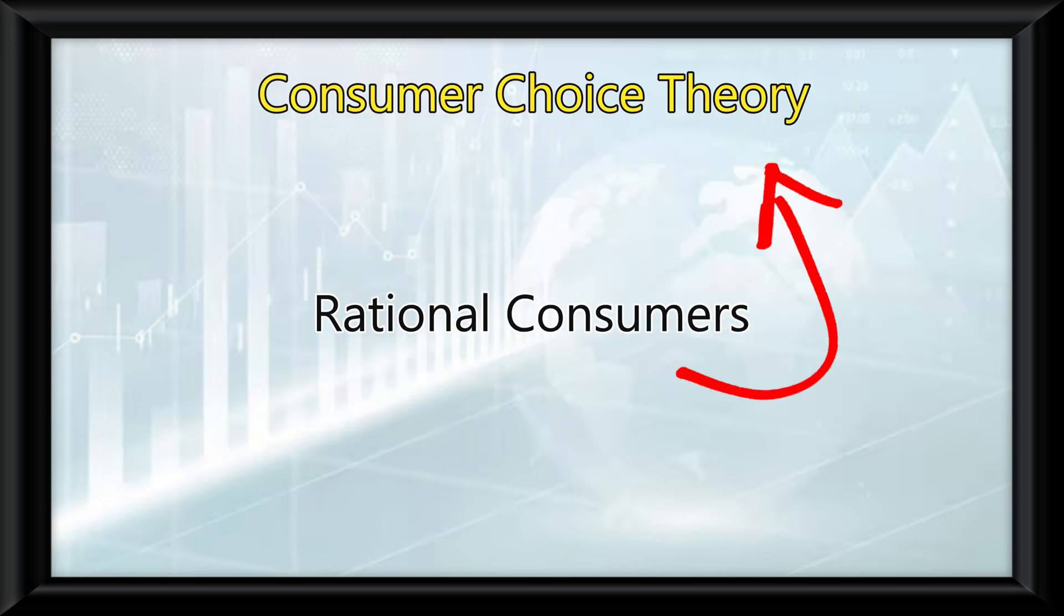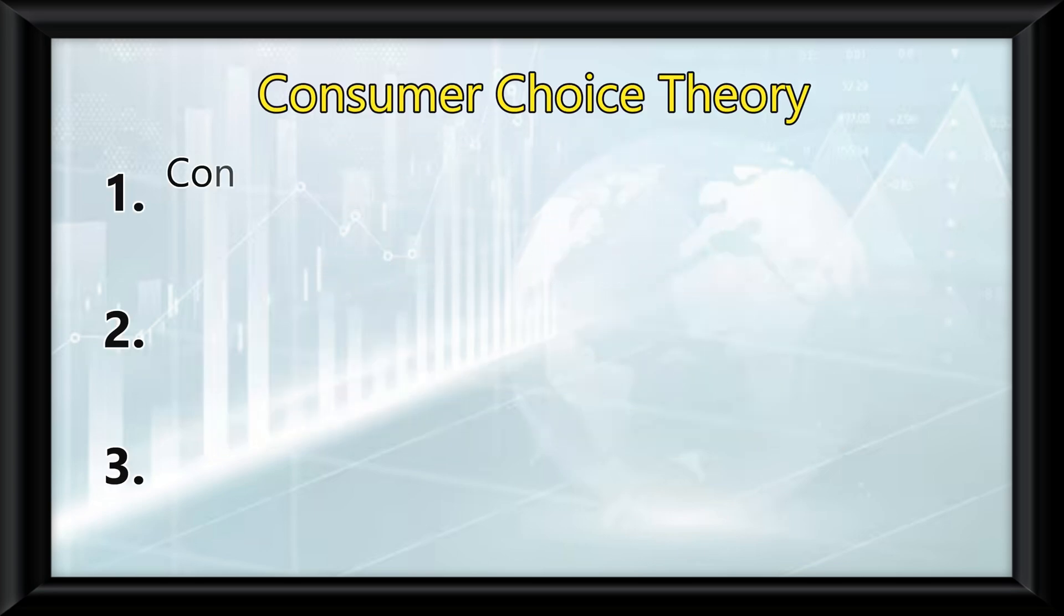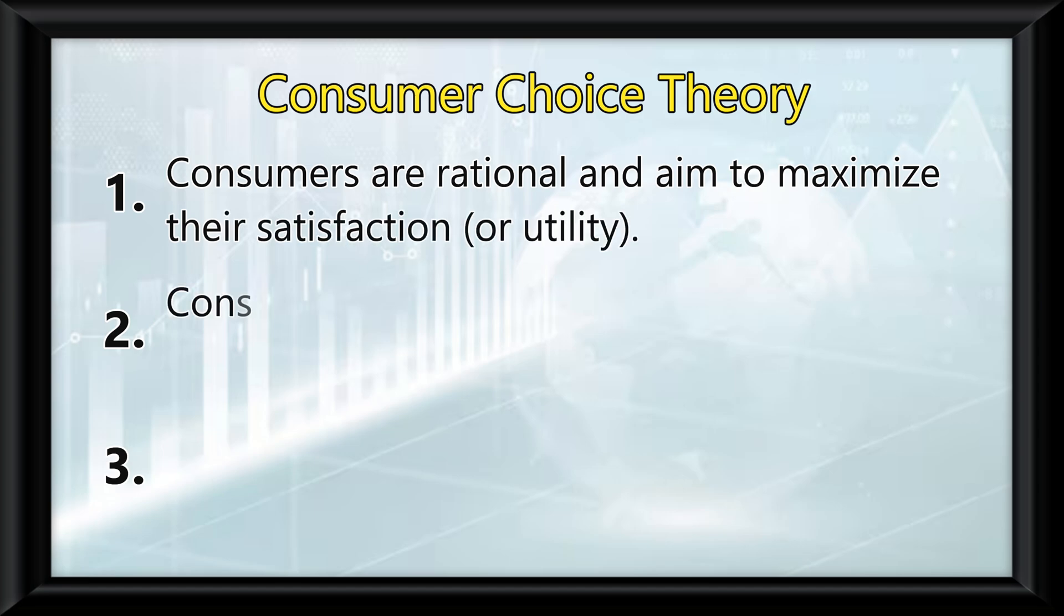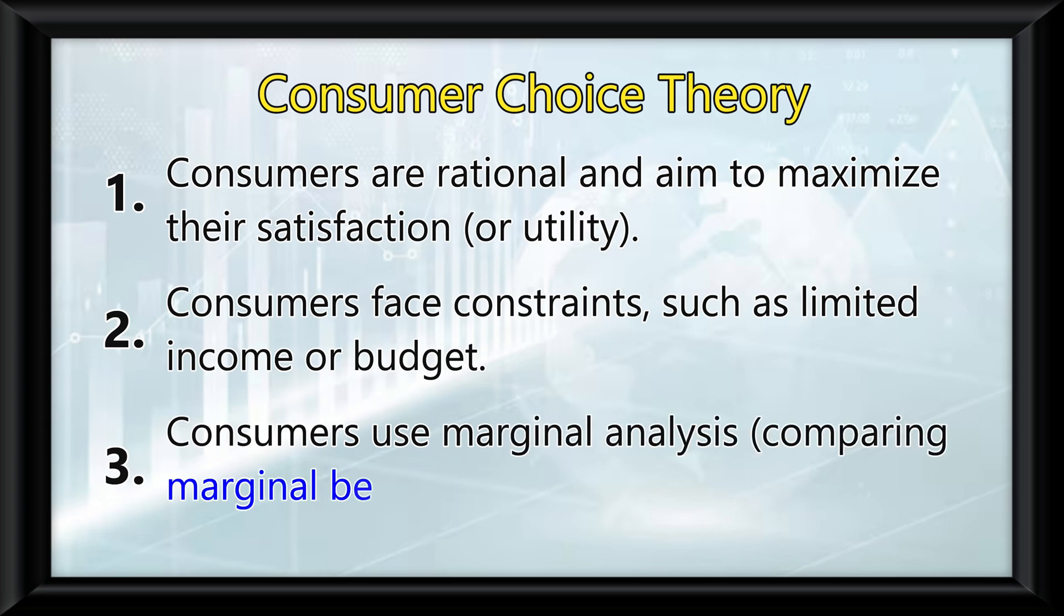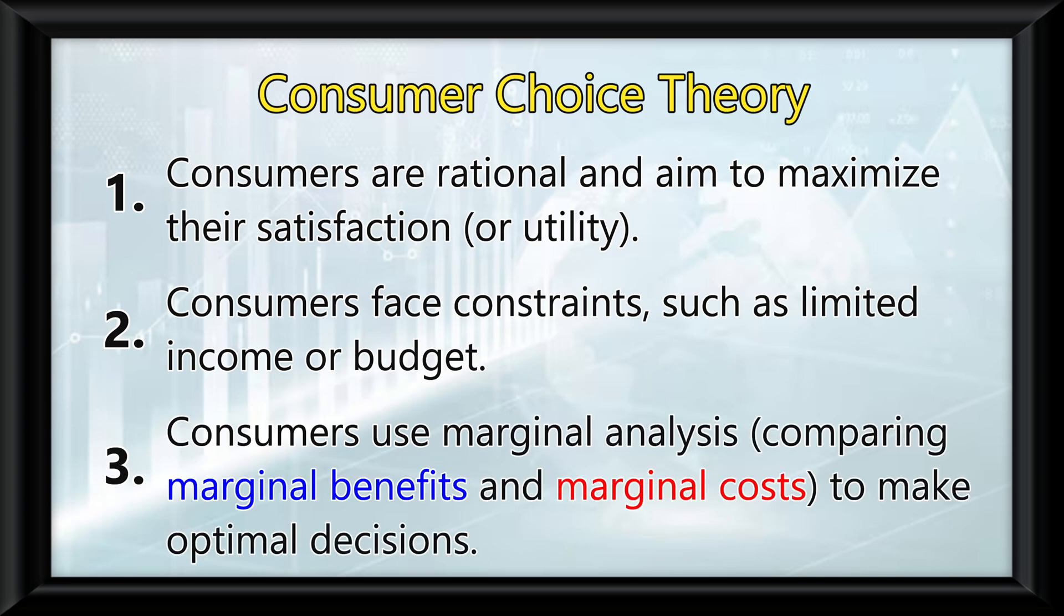This leads us into the consumer choice theory, which revolves around 3 ideas. Consumers are rational and aim to maximize their satisfaction or utility. Consumers face constraints, such as limited income or budget. And number 3, consumers use marginal analysis, which is comparing marginal benefits and marginal costs to make sure it's the optimal decision.